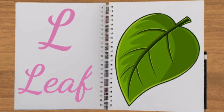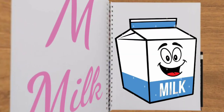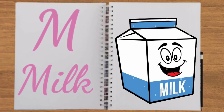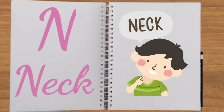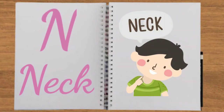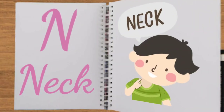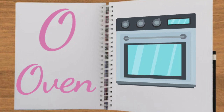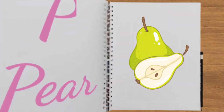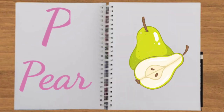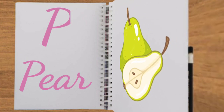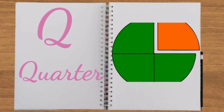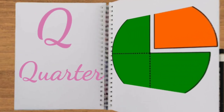K for kettle, L for leaf, M for milk, N for neck, O for oven, P for pier, Q for quarter.